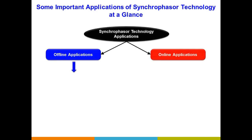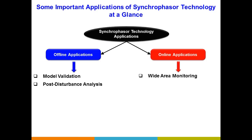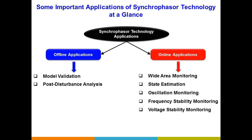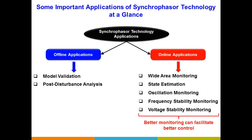In the offline applications we have model validation and post-disturbance analysis. In the online applications we have wide area visualization and monitoring, state estimation, oscillation monitoring, frequency stability monitoring, voltage stability monitoring, and so on. Better monitoring can facilitate better control — if we can monitor the system in a better and more efficient manner, our control can also become faster. I also want to note that there are other applications of Synchrophasor Technology; I've chosen a few to give an overview of how powerful this technology is.